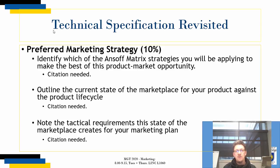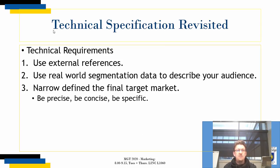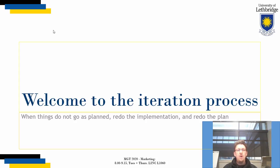Strategy, state of the product lifecycle, and the tactical requirements — there is a list of them in the textbook and there was a slide on them in the PowerPoints. You should get a very easy, soft citation there. Revisiting technical requirements: you need external references, you need real-world segmentation data, and you need that final target market to be precise, concise, and specific — so your assignment is much easier to write. This is doable, this is fixable. The iteration process is on — things did not go as planned, we redo the plan, we redo the implementation. You will have just under a week to edit, modify, and fix your current assignments. You don't have to start from scratch — you just need to make repairs and upgrades.